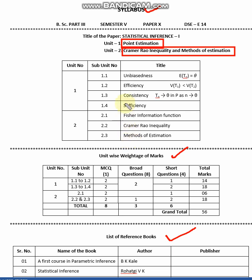Therefore we need to find out what are the good estimators. To find good estimators, there are four properties: the first is unbiasedness, the second is efficiency, the third is consistency, and the fourth is sufficiency. We will see all these characteristics of a good estimator one by one when we start the course.